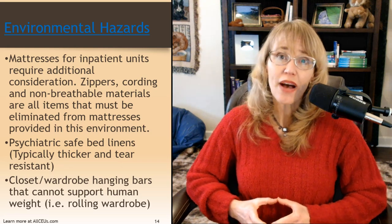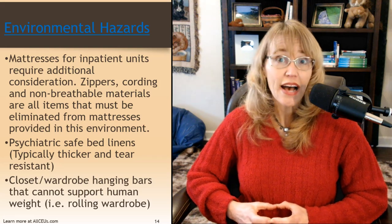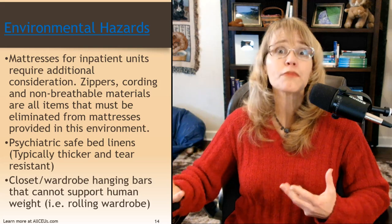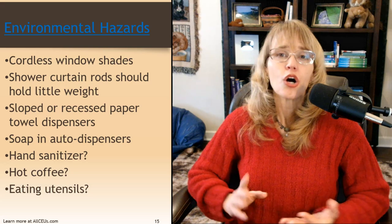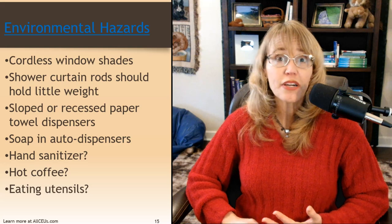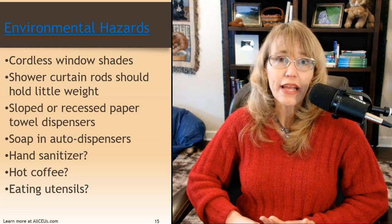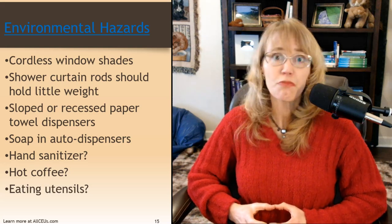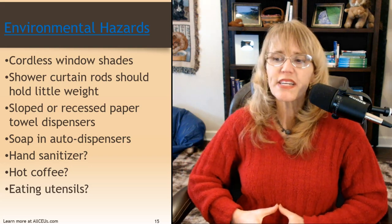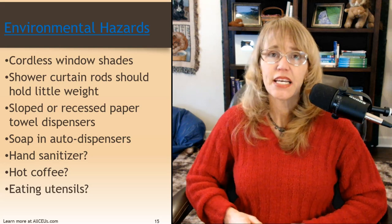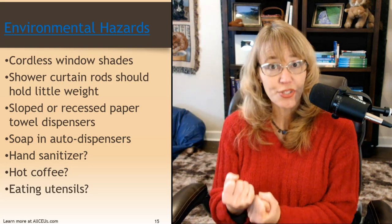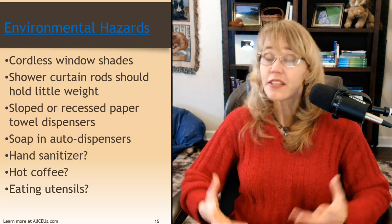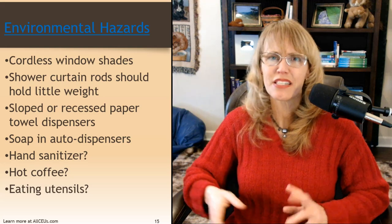This applies even in private practice if you have an unsupervised coat closet — you don't want people being able to harm themselves while sitting in your waiting room. Cordless window shades are important. If there's a shower in your facility, the curtain rod should hold very little weight. Sloped or recessed paper towel dispensers in bathrooms are important because you don't want somebody to tie something around it and use it as a support. Soap in auto dispensers is also recommended — it's much more hygienic and you know soap is available.